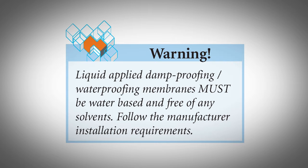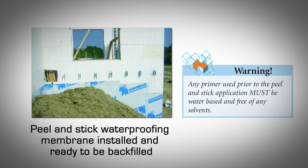Peel and stick damp proofing and waterproofing systems. Peel and stick systems are made of membranes which adhere directly to the EPS on AMBIC ICF. One side of the membrane has a thin film of glue protected by a paper sheet. Once the paper sheet is peeled off, the membrane is adhered in place per the manufacturer's installation guide. In most cases, the manufacturer will also recommend a specially formulated primer applied to the EPS face before applying the membranes to improve adhesion. Peel and stick membranes may require a protection layer against sharp, heavy gravel — check the manufacturer's specifications. Any primer used must be water-based and free of any solvents.